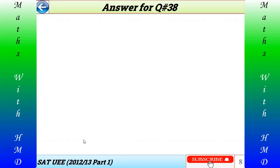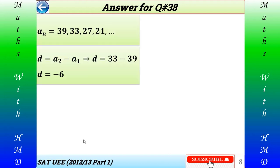Here is the answer for question number 38. The sequence is 39, 33, 27, 21, and so on. The common difference d = a2 - a1 = 33 - 39 = -6. So the common difference of this arithmetic sequence is -6.